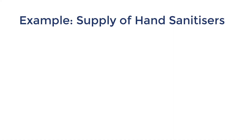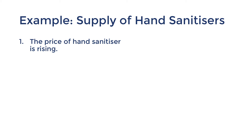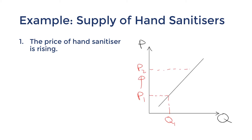So those are the influences on supply. Let's go through a few examples to solidify what we've learned, looking at the supply of hand sanitizers. How has the supply of hand sanitizer been influenced by these scenarios? Scenario one: the price of hand sanitizer is rising. A rise in the price of the hand sanitizer itself would cause an expansion in the supply of hand sanitizer.